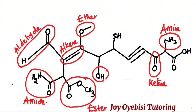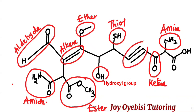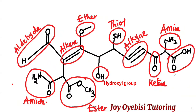Moving on, this one is known as a hydroxyl group — all alcohols will have OH attached to them. The next one is called a thiol. This one with a triple bond — whenever you see a carbon-carbon triple bond, it is called an alkyne.